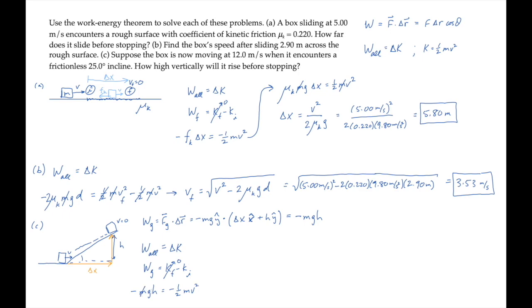Cancel the masses and solve for the height h to which the box rises before it stops. That gives us this expression, which we can evaluate to find the box rises 7.35 meters above the horizontal surface before it stops moving.